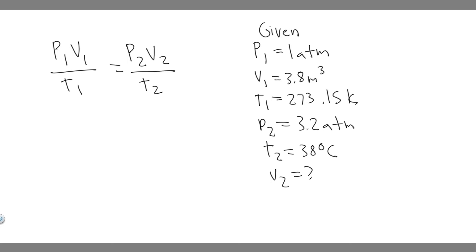STP just means standard temperature and pressure. So standard pressure is 1 atmosphere, and then standard temperature is just 273.15 Kelvin. So we've got the pressure, we've got the volume, and we've got the temperature.